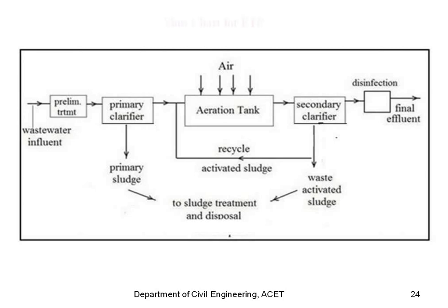This is the flow chart for ETP. First, wastewater effluent is collected in the primary treatment stage, then a primary clarifier is used, followed by a flocculator. Sludge is collected here, and water is passed into the aeration tank. From the aeration tank, it goes to the secondary clarifier, then to the disinfection section, and finally to the final effluent. All the sludge is collected, treated, and disposed of.